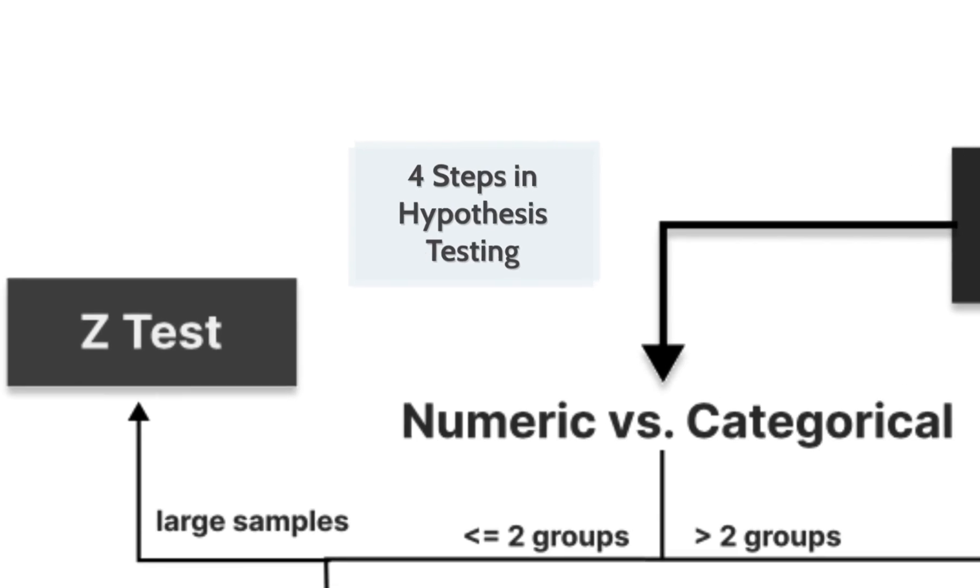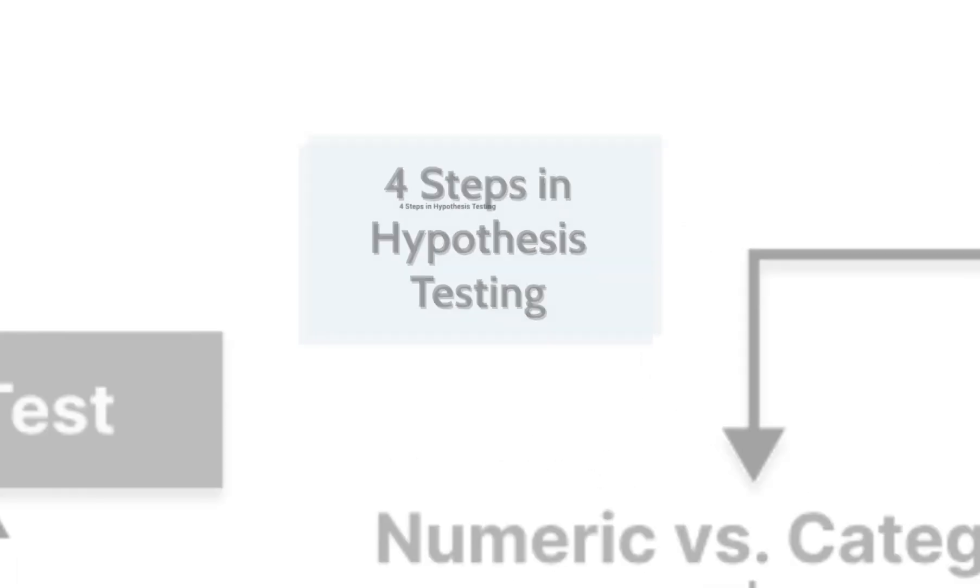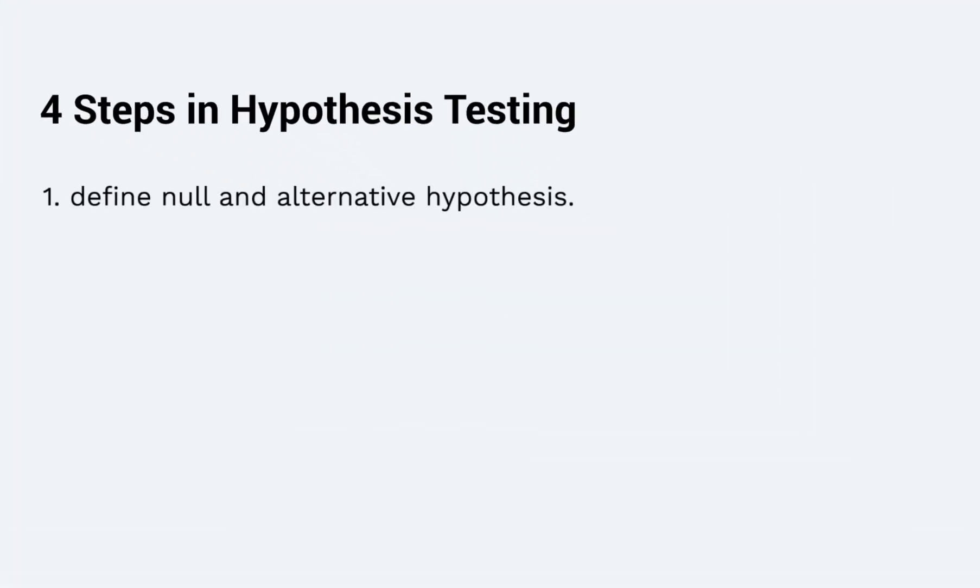There are four essential steps in hypothesis testing. Firstly, we need to define null and alternative hypotheses. Null hypothesis, commonly noted as H0, is the claim that no effect, no difference, no relationship exists. Alternative hypothesis or H1 is contradictory to the null hypothesis and claims that relationships exist. It is the hypothesis that we would like to prove right.